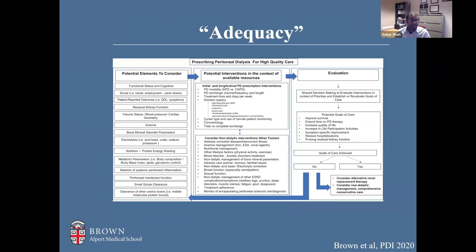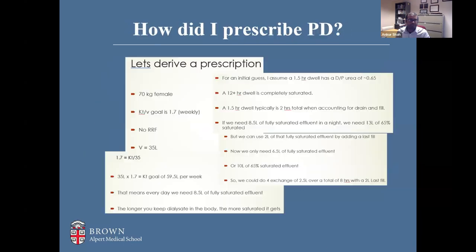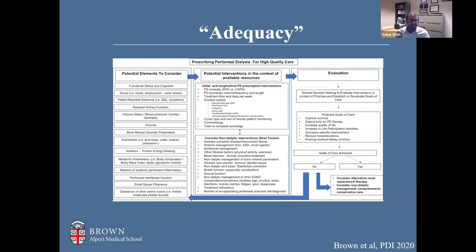We should target adequacy in a broader sense — including functional status, social goals, patient-reported outcomes, residual kidney function, volume status, blood pressure, cardiac geometry, mineral bone disease, and anemia. Moving from those elements, we should think about our patient's goals of care: improving survival, extending time on PD, increasing quality of life. In the US we love the term adequacy, but nobody wants dialysis to just be adequate — we want patients thriving. Using a broader, more global perspective is the way to get from adequacy to thriving. Goal-directed PD means prescribing differently for the patient whose goal is their grandchild's wedding versus the patient aiming to live another 50 years.